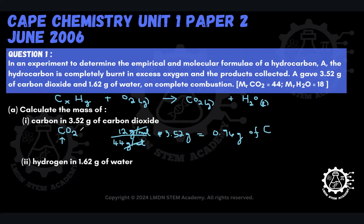In one molecule of carbon dioxide, there is only one carbon atom, and that carbon atom has a mass of 12 grams per mole. Because we're looking at the amount of carbon present in carbon dioxide, we divide by the molecular mass of carbon dioxide. The multiplicative part is because we only have 3.52 grams of carbon dioxide — we multiply this fractional value of carbon by that mass, giving us the mass of carbon present in that specific amount of carbon dioxide.